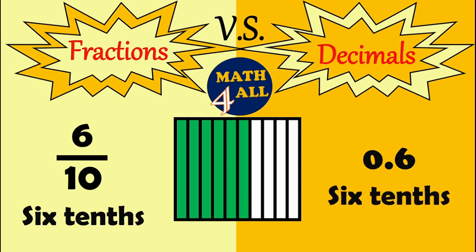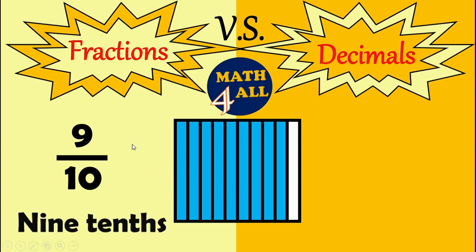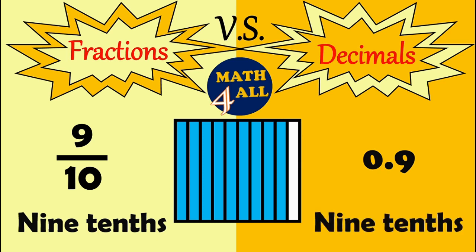Now it's your turn — can you solve this? Here we have one square broken into ten equal parts. We have just nine colored parts out of ten, so we are going to read this fraction as nine over ten. We can also read it as nine tenths. On the other hand, the decimal form — we will write zero point nine, and we can also read it as nine tenths.